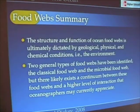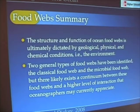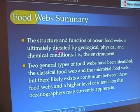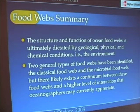The structure and function of ocean food webs is really dictated by the environment. These two different kinds of food webs operate in different manners and have different players, but it's really the conditions that determine whether one food web is dominant or the other.